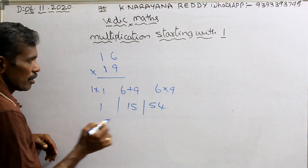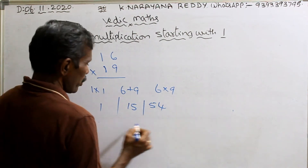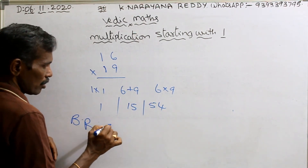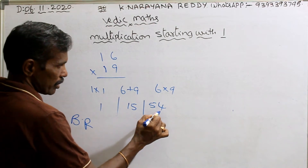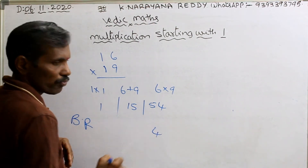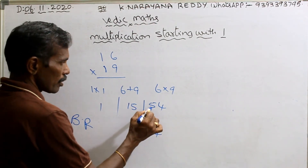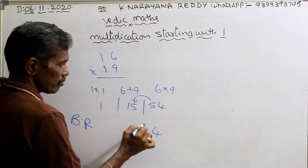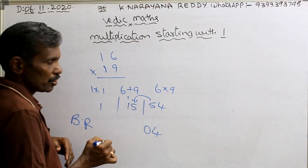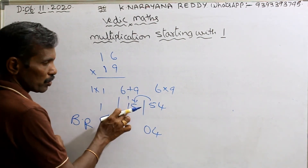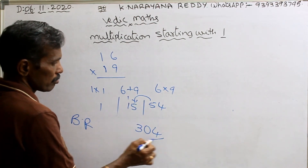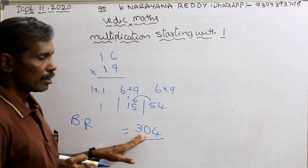What is the balancing rule? Now we can use it. First, take from right: 6 into 9 is 54. Then 6 plus 9 is 15 — that means 5 here and carry 1. 1 plus 1 is 2, 2 plus 1 is 3. That's all — the answer is 304, not 4.